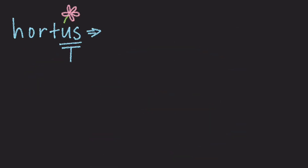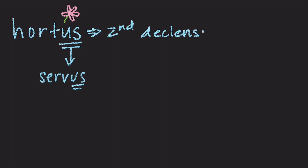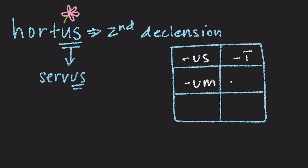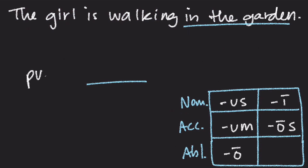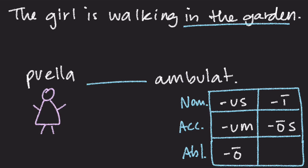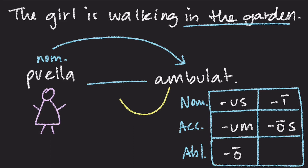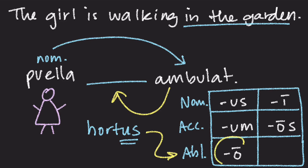Now, what if we're looking at the word Hortus? Hortus ends in U-S just like the word Serwus. Since Serwus is second declension, that means Hortus is also second declension, and it will have those endings. What if we're trying to write the sentence: the girl is walking in the garden? We know we need Puella, our nominative singular girl, and a verb — in this case Ambulat, meaning is walking. Since Puella is nominative, she is doing the action. But we need the place where she is doing the action, and the ablative is responsible for telling the place where an action occurs. So Hortus needs to change to its ablative form — the long O of the second declension ablative — and Hortus changes to Horto.